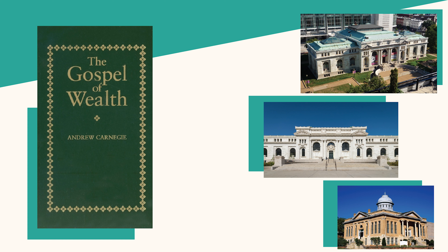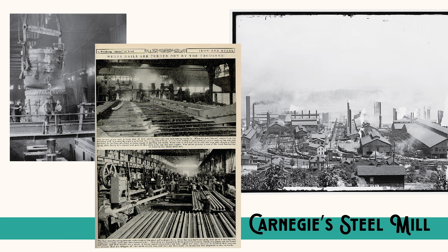His philanthropy set a new standard for giving among the wealthy, and his legacy of generosity continues to inspire others to give back today. He also supported libraries, believing that access to books was key to promoting self-education and social progress. Between 1883 and 1929, he donated money to build more than 2,500 public libraries in the United States, many of which are still in use today. Through his steel industry, he transformed the United States into a modern industrial nation, using the Bessemer process to produce steel quickly and cheaply. His steel mills provided raw materials for the construction of railroads, bridges, and skyscrapers, creating jobs and economic growth across the country.